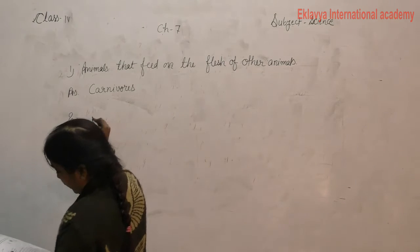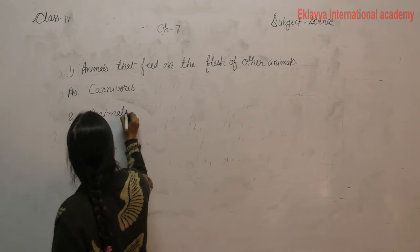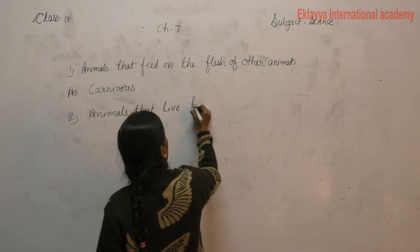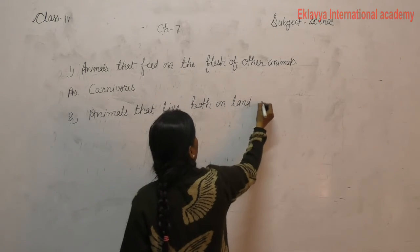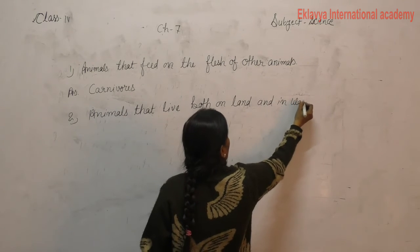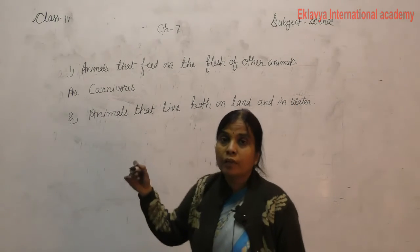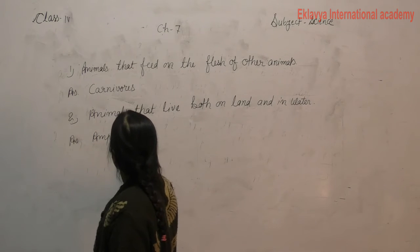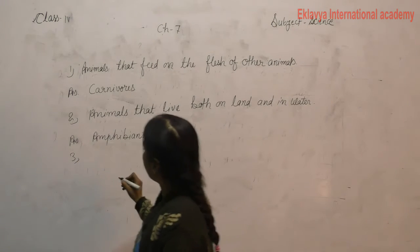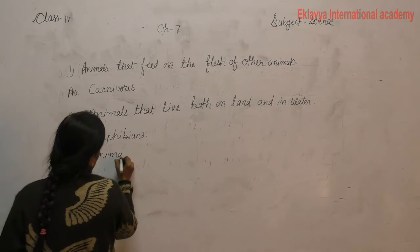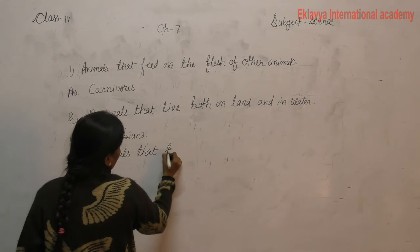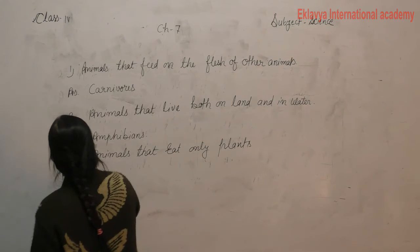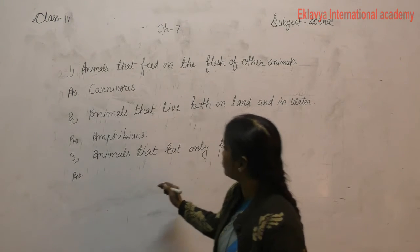Next — animal that lives both on land and in water. Answer: amphibians. Third — animal that eats only plants. Answer: herbivorous. Animals that eat only plants are herbivorous.